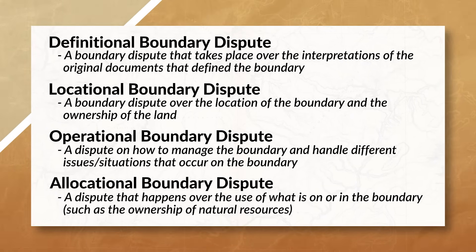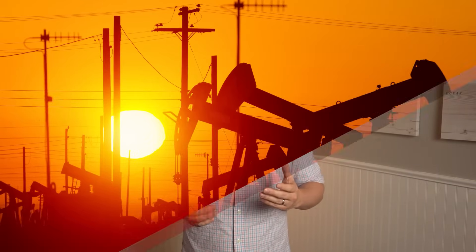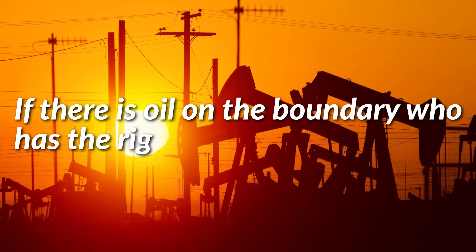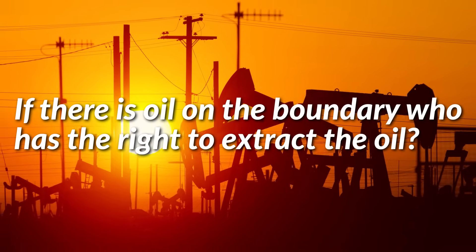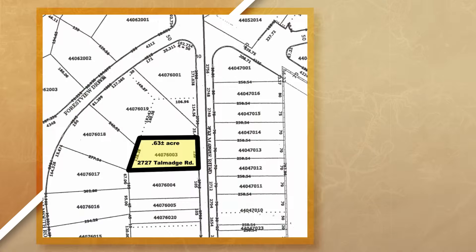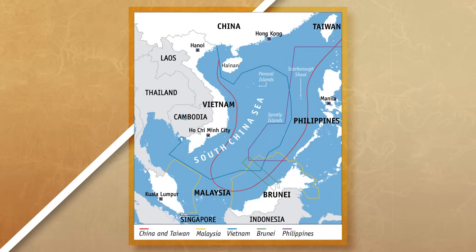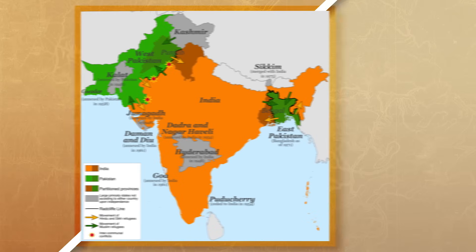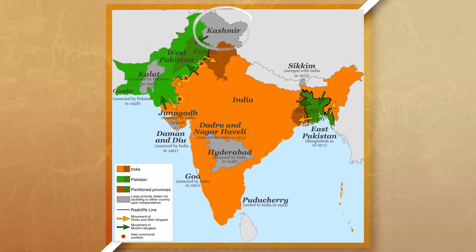Then there are allocational boundary disputes, which are over the use of what is in or on the boundary. Most of the time, these disputes are over natural resources — for example, if there's oil on the boundary, who has the right to extract it? Boundary disputes happen for a variety of reasons, and severity varies by scale. At the local scale, disputes involve property lines and school districts, while at the national or global scale, disputes occur over natural resources like water or natural gas, or ownership of a particular territory.